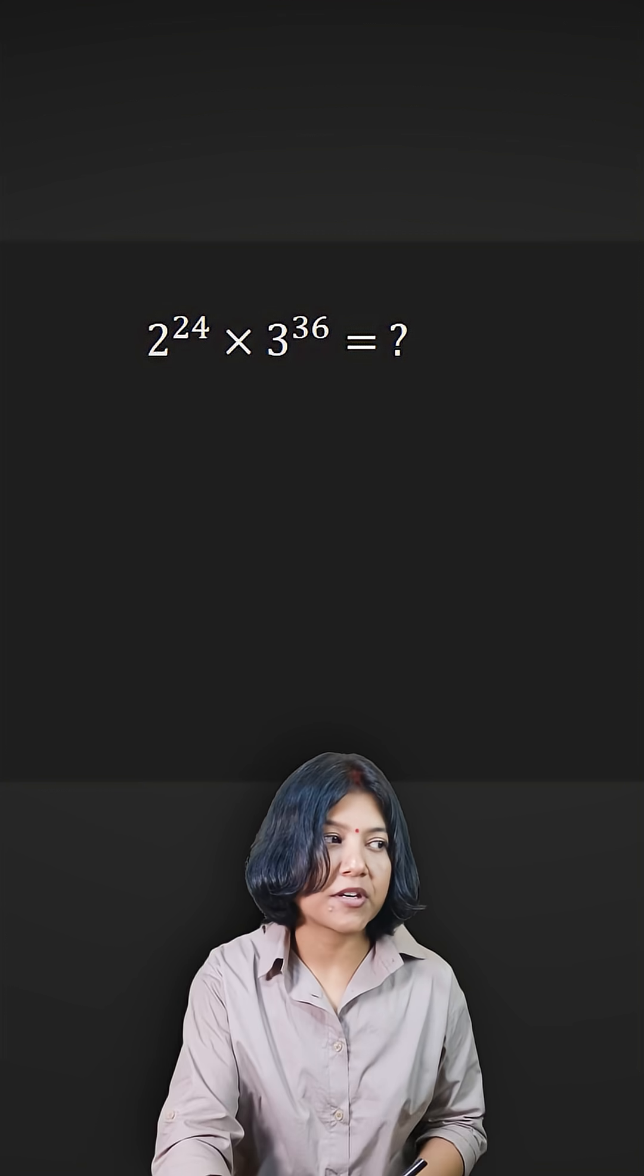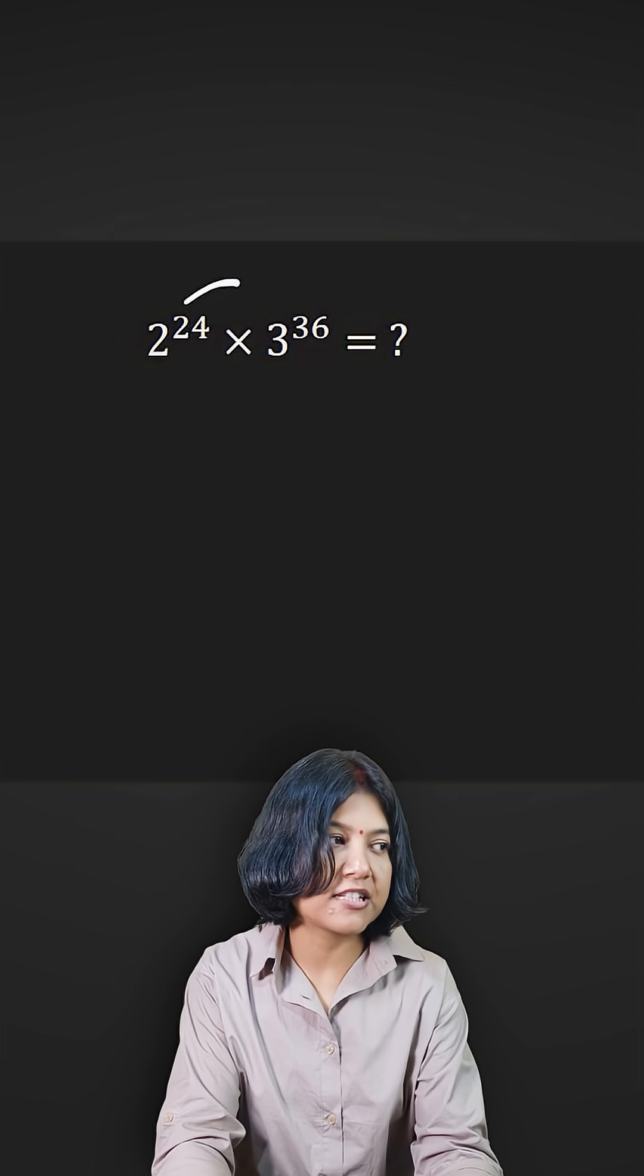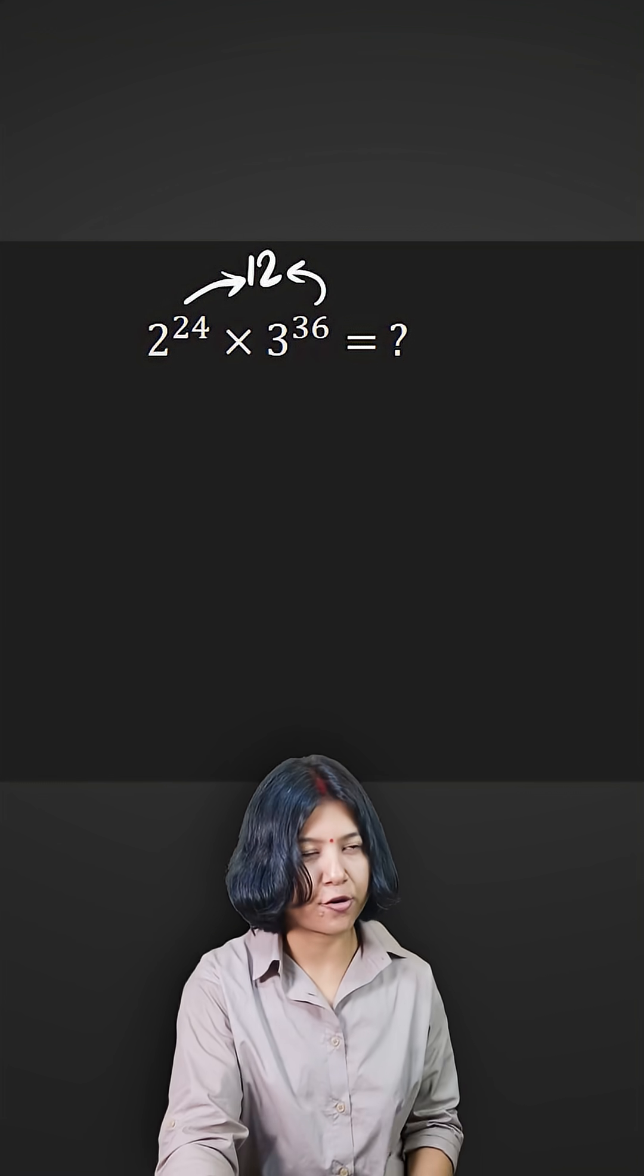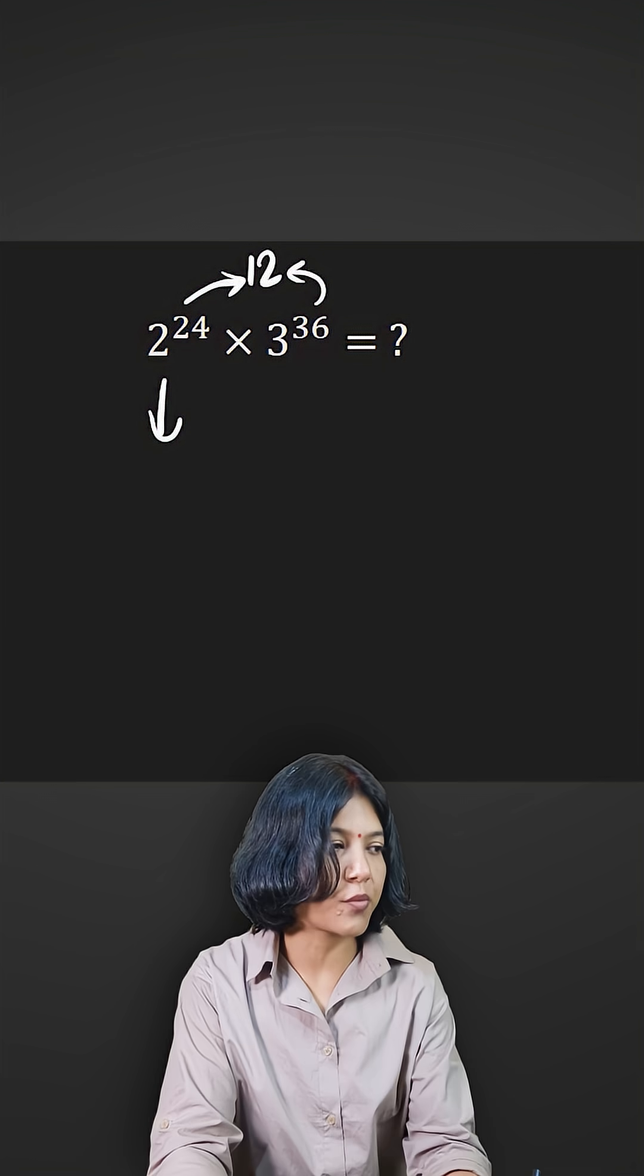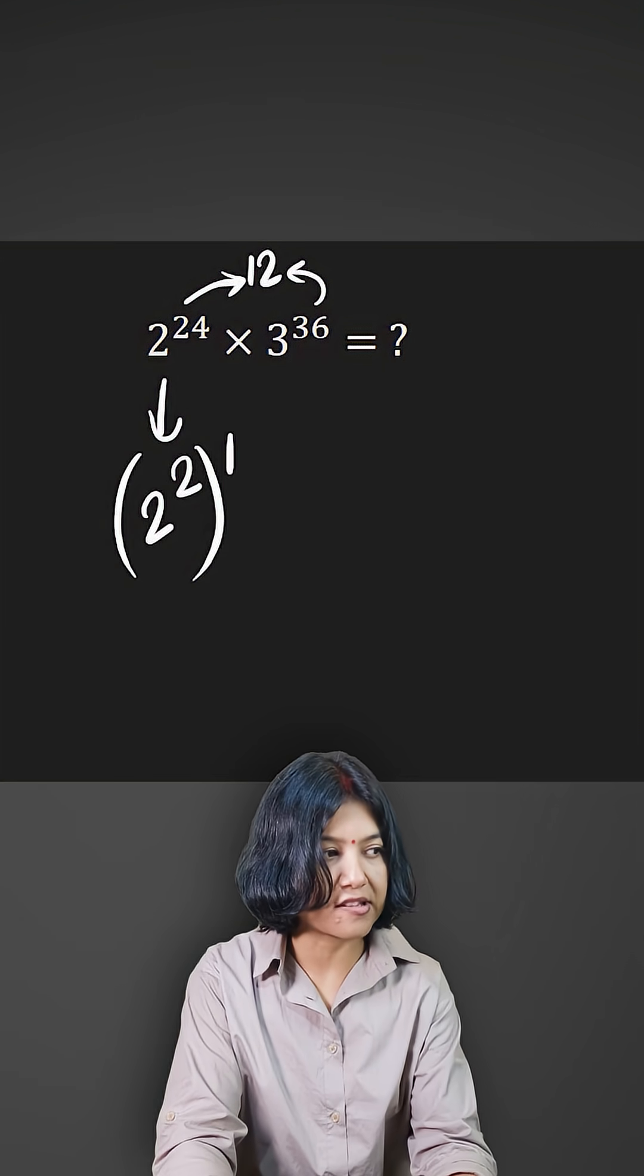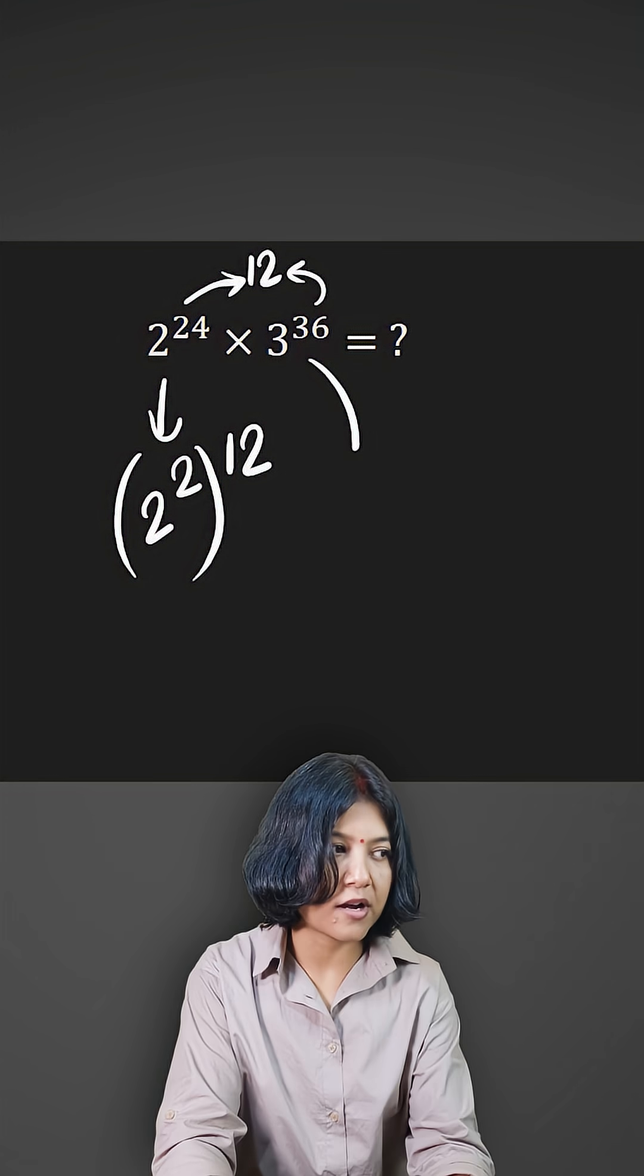So you look at the powers 24 and 36. Both come in the table of 12, correct? So I want to write them in terms of power of 12. For 2 to the power of 24, 2 into 12 is 24, so I'm going to write 2 inside and 12 outside.